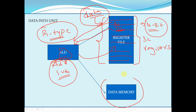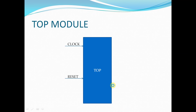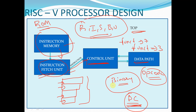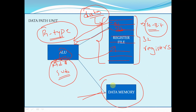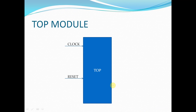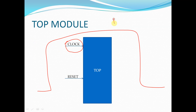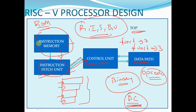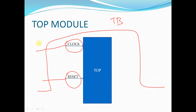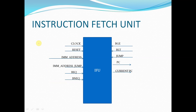The data memory usage will be explained later. This is the basic architecture of our RISC-V processor — what we are going to design. Coming to the top module, it has only two inputs: clock and reset. We provide the clock and reset signals to the top module with the help of the test bench. The top module contains all the modules we have discussed.